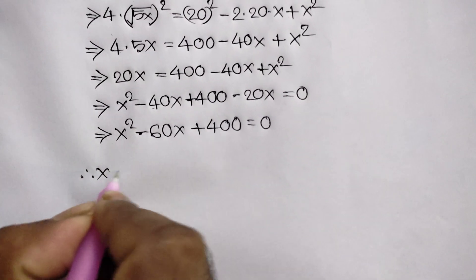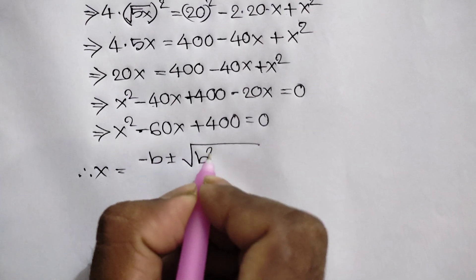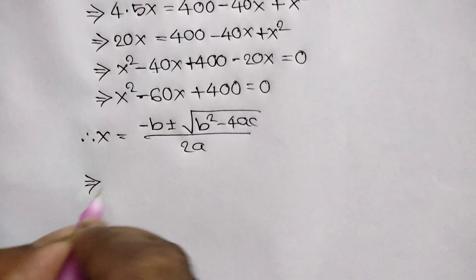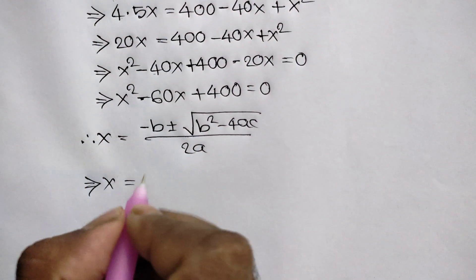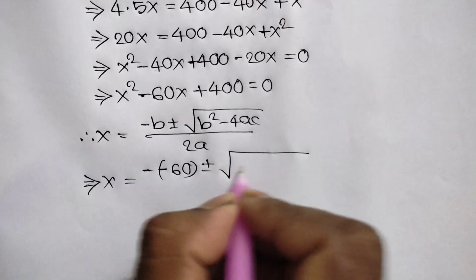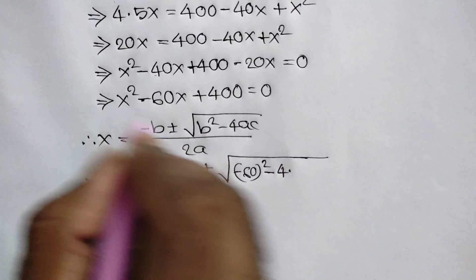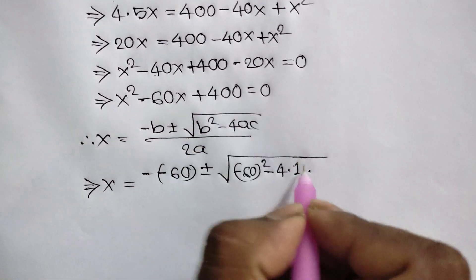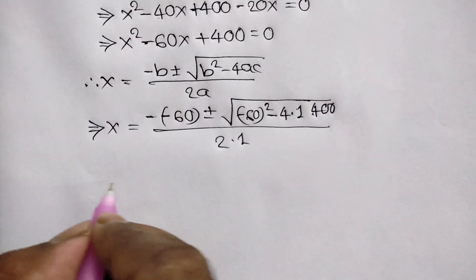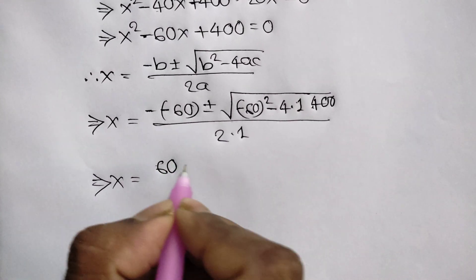So we can write: x is equal to negative b plus or minus square root of b squared minus 4ac, over 2a. Here b is equal to negative 60, so we can write negative times negative 60, plus or minus square root of negative 60 squared minus 4 times a, where a equals 1, times c, where c equals 400, over 2 times 1.